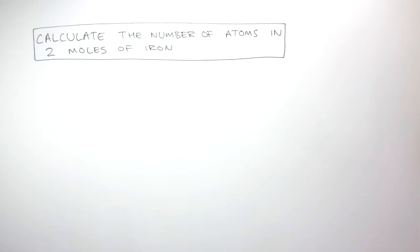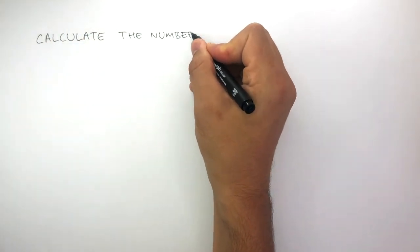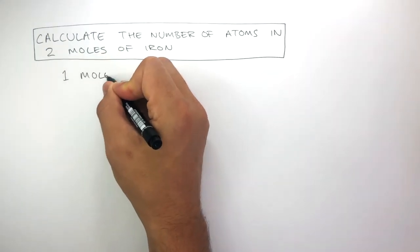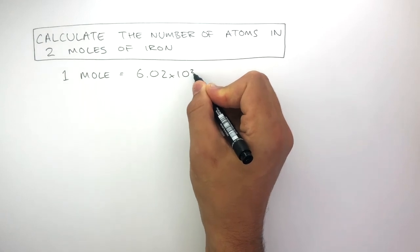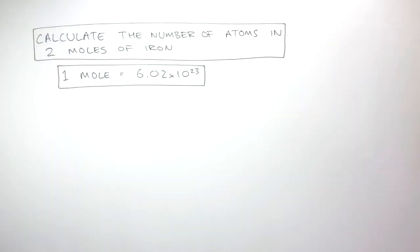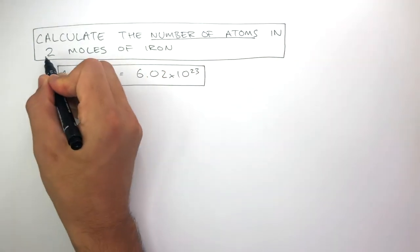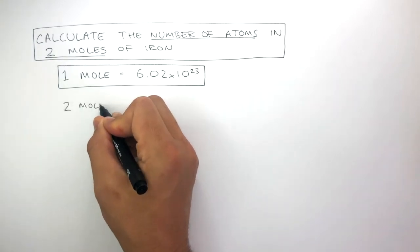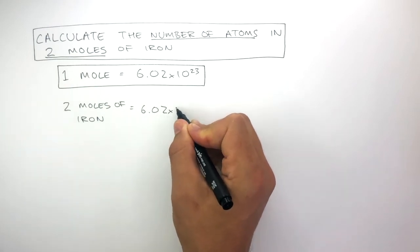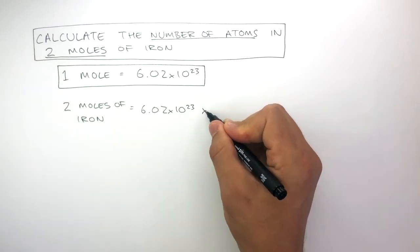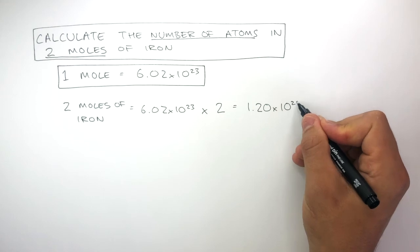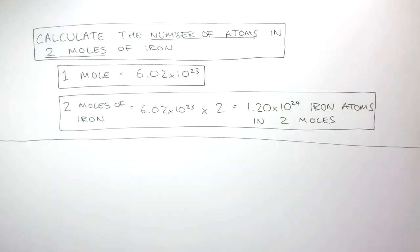Here is another exam style question: calculate the number of atoms in two moles of iron. To do this, we need to know that one mole equals 6.02 times 10 to the power of 23. The question asks for the number of atoms in two moles of iron, so we do 6.02 times 10 to the power of 23 times 2, which equals 1.20 times 10 to the power of 24 iron atoms in two moles.